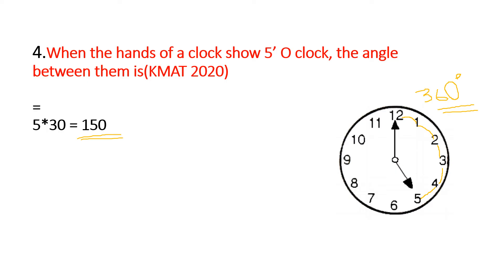5 times 30 equals 150. So this is the answer. We can also find the opposite angle: 360 minus 150. This is the same method — the reflex angle using 360 minus the calculated angle.